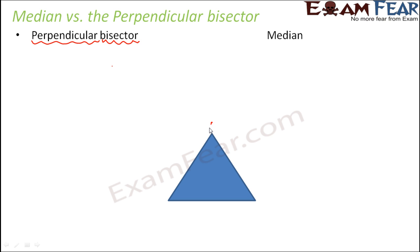Let's say we have triangle ABC and we want to draw the perpendicular bisector of side BC. The perpendicular bisector of BC would be a line which bisects BC into two equal parts — so this is the midpoint of BC — and also that line should be perpendicular to BC. So a line drawn like this, perpendicular to BC and dividing it into two equal halves, is called a perpendicular bisector.